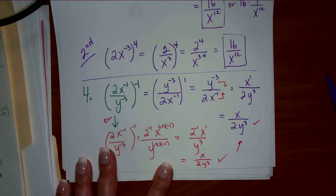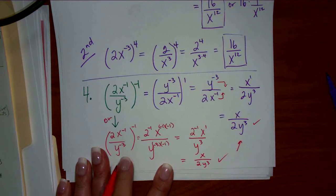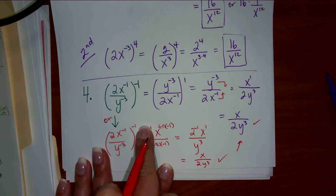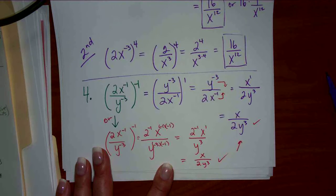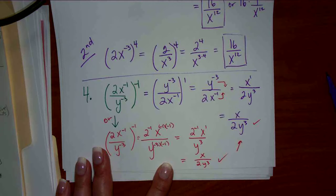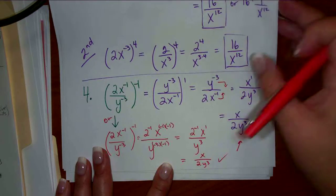There are lots of ways you could do it — you could have instead made the exponents inside positive first and then flipped the whole fraction. They all end up with the same answer. If it's like negative 2 on the outside, I would probably make the exponents inside positive first and then apply the negative 2. There's still lots of ways — we'll do one like that anyway.